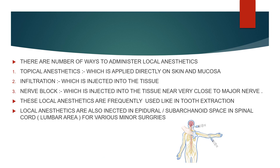There are a number of ways to administer local anesthetics. Topical anesthesia is applied directly to the skin or mucosa. Infiltration, where the medication is injected into the tissue, or nerve block, where the medication is injected into the tissue near a major nerve. These are frequently used for minor procedures, like getting your tooth pulled or getting a polyp removed from inside your nose. Local anesthetics can also be injected into the epidural space, or the subarachnoid space in the spinal cord, to numb larger areas.